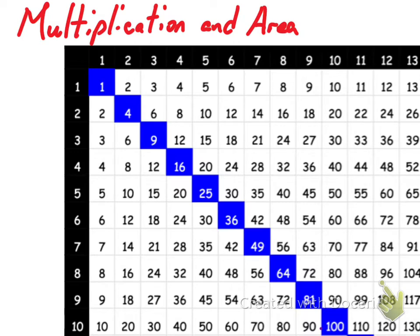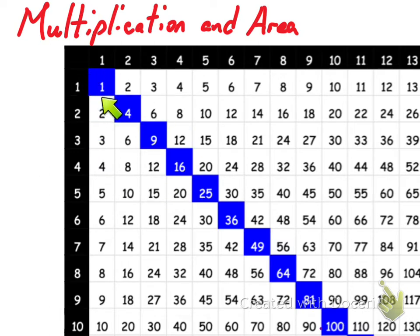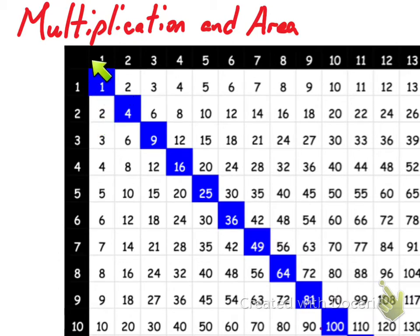So the multiplication table is an area model. If you think about it, there are all these little one-by-one squares. The dimensions of this square are one and one, and actually the dimensions of this square are one and one. So they're all just one-by-one squares.